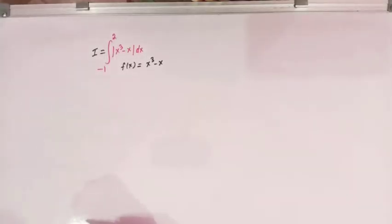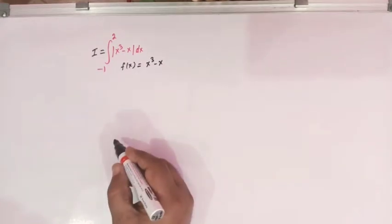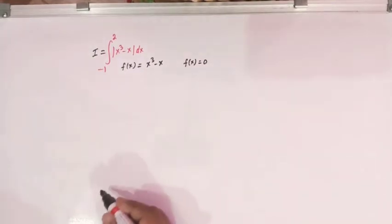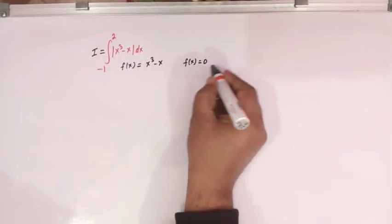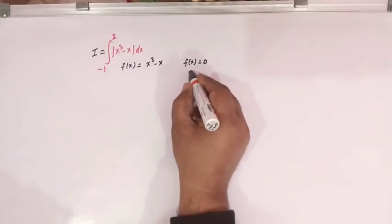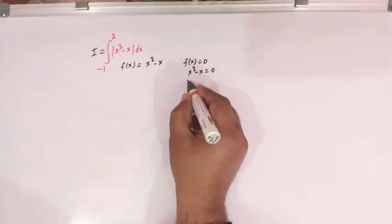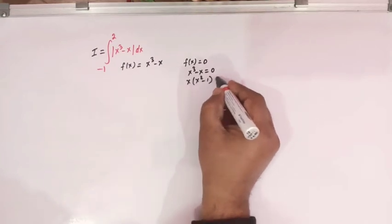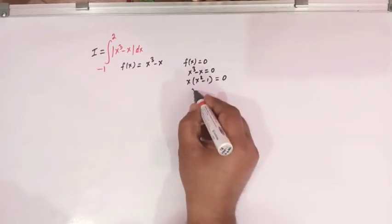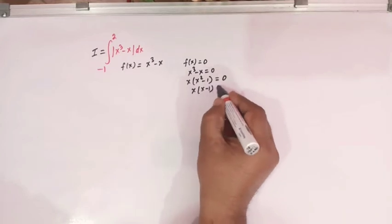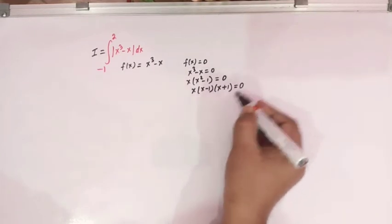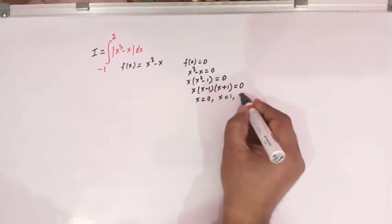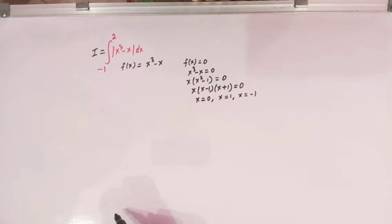In order to find out the critical points, let us solve the equation f of x is equal to 0. So when f of x is equal to 0, then x cubed minus x is equal to 0, and taking x common, we have x times x squared minus 1 equal to 0. So we have x times (x minus 1)(x plus 1) equal to 0, giving us x equal to 0, x equal to 1, and x equal to minus 1.